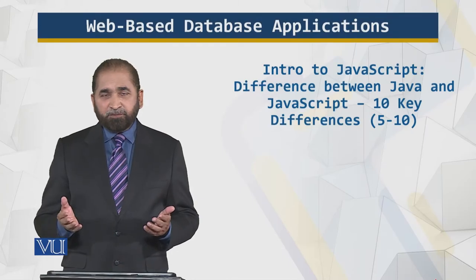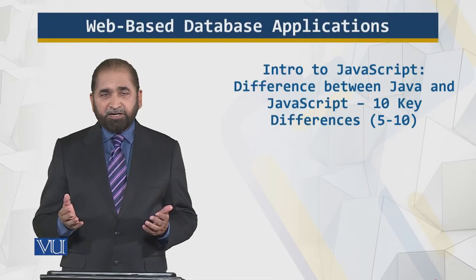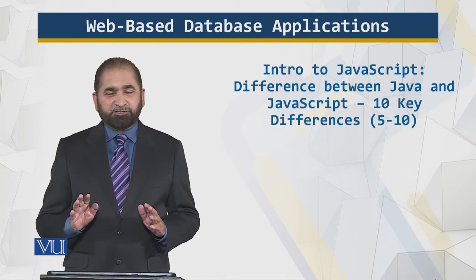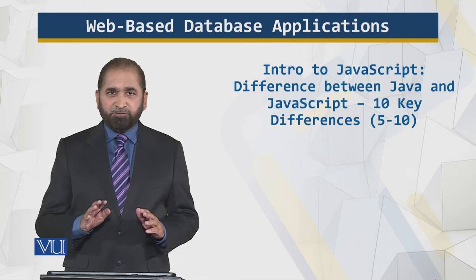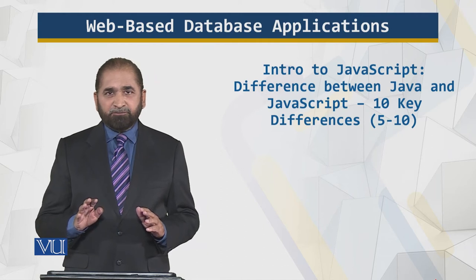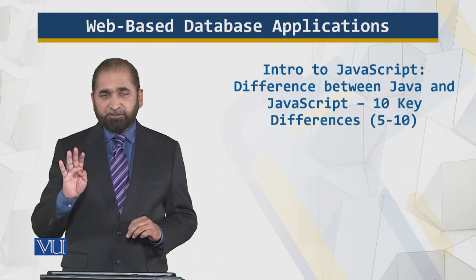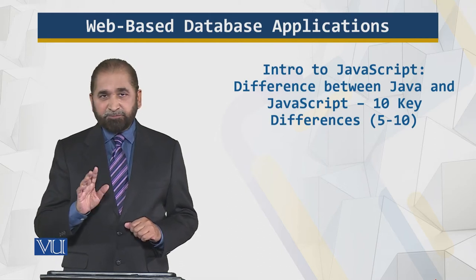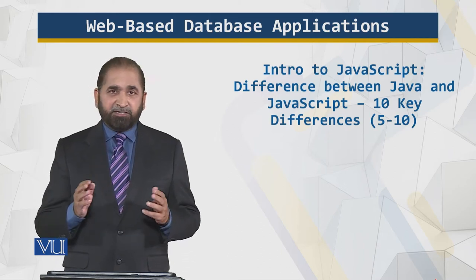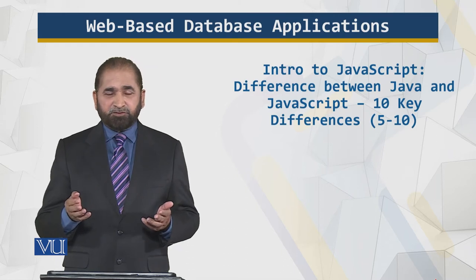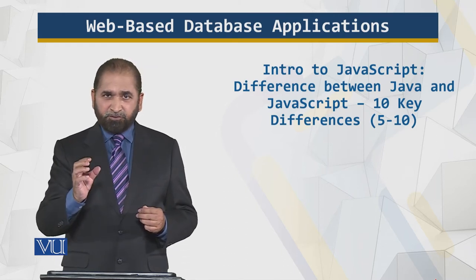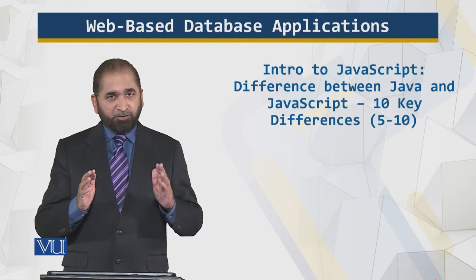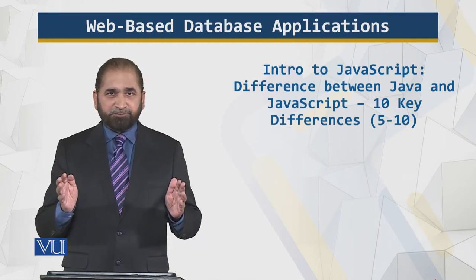In this module we will look at the remaining key differences between Java and JavaScript. In the previous module we looked at four key differences, but now we look at the remaining six key differences. Remember, there can be other differences also, but we are just focusing on the key differences to differentiate how JavaScript is different from Java.